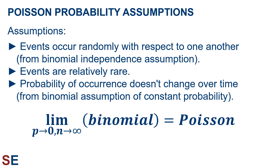The Poisson probability has three important assumptions. First, the events occur randomly with respect to one another — this assumption comes directly from the binomial distribution independence assumption. Second, the events are relatively rare, which is what allows us to replace the binomial equation with the Poisson equation. Third, the probability of occurrence doesn't change over time — this comes directly from the binomial distribution's assumption of constant probability. In fact, one way to think about the Poisson distribution is as the limit of the binomial distribution as the probability of each event goes to zero and the number of trials goes to infinity.